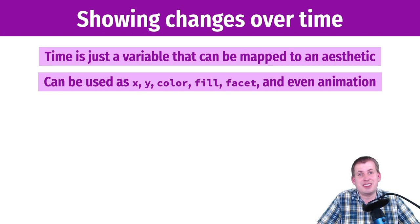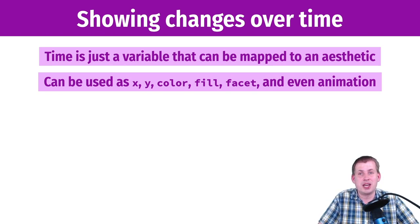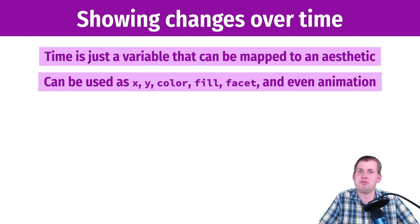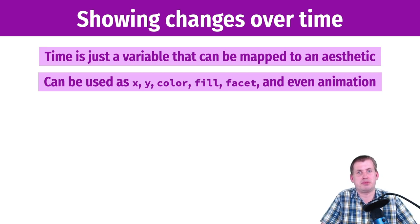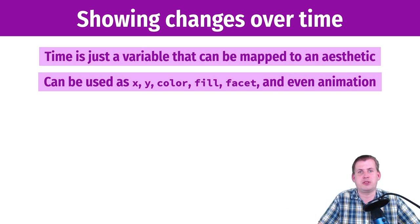Time can be on the x-axis, on the y-axis, it can be a facet, you can fill by time, you can color by time — basically any aesthetic you want, you can map it to your column that shows time. That's the main secret of visualizing time: it's a column, do something with it.